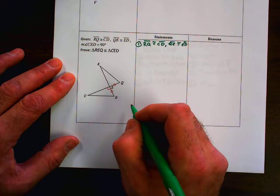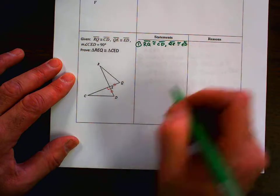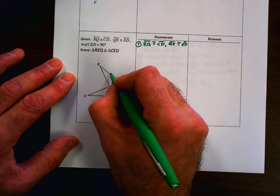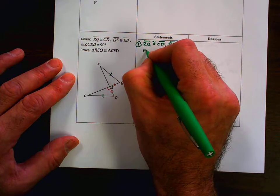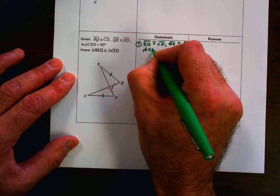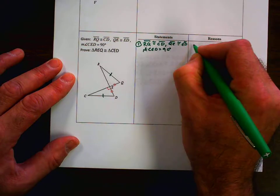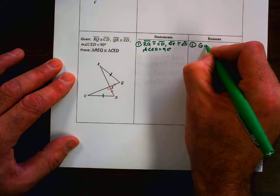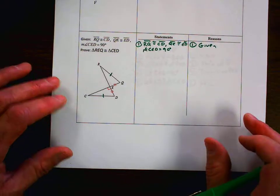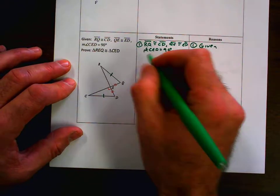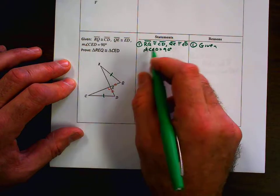I'm going to go ahead and list all these. QE is congruent to ED. That's already marked, but the RQ and CD were not marked. So I'm going to go ahead and mark those. And then I'm going to say measure of angle CED is equal to 90 degrees. And that all was given information. Once I have that, now I'm going to want to go ahead and get the CED.